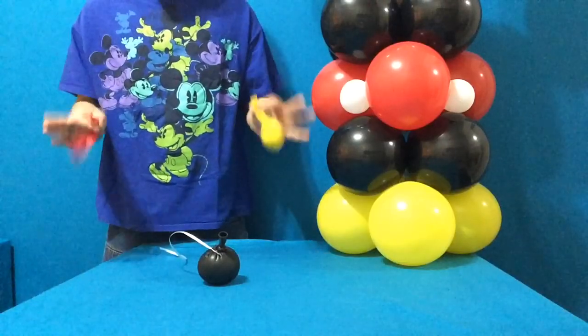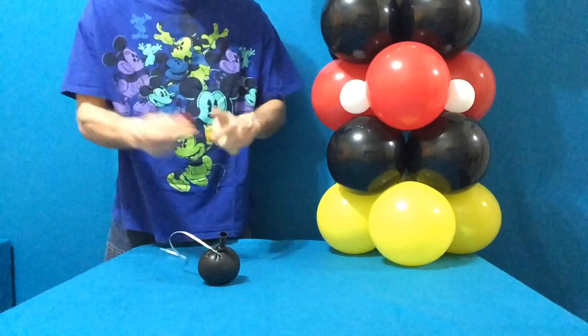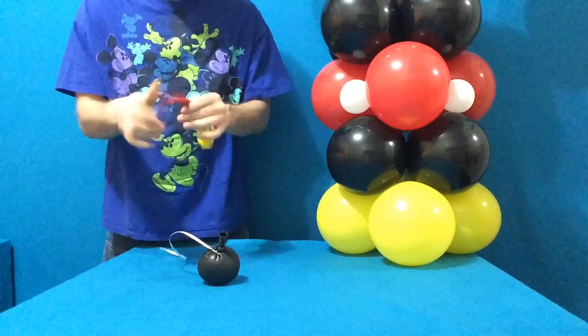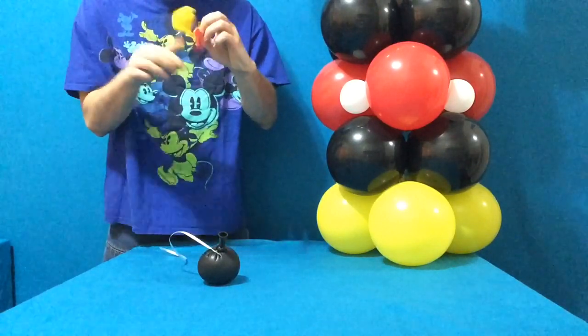Take two uninflated balloons, twirl one like a piece of licorice, and then twist it into the mouth of the second balloon, pulling down until it goes inside.